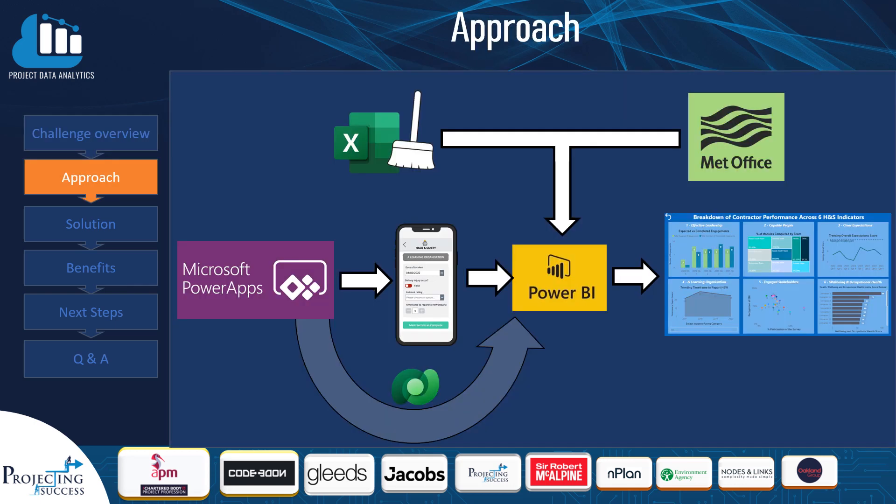Our approach involved cleaning the source data, which were historic records of contractor performances in six health and safety categories. We then complemented this with Met Office weather data such as rainfall and temperature to see if this could reveal any causality to a lower health and safety performance.